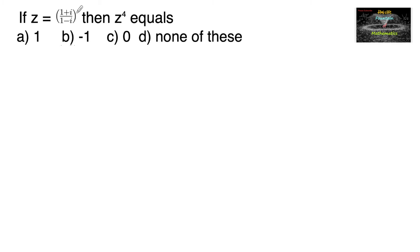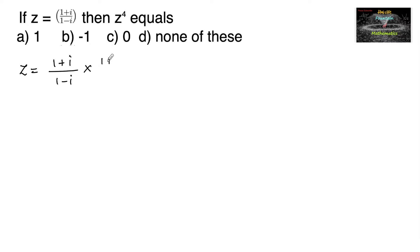If z is equal to 1 plus i upon 1 minus i, then z to the power 4 equals what? Let us simplify first. z is equal to 1 plus i upon 1 minus i. We will multiply and divide with the denominator's conjugate.